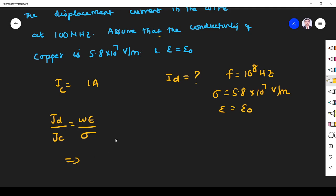So Id = (ωε/σ) × Ic. You may ask how j becomes I. We know that jd = Id/A, similarly jc = Ic/A. So A cancels, giving Id/Ic. So Id = (ωε/σ) × Ic.